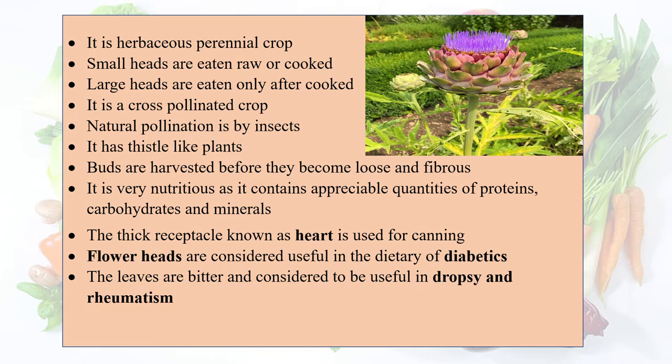Storage is also low once buds become loose and fibrous, so they are mostly harvested before that stage. It is very nutritious, containing appreciable quantities of proteins, carbohydrates, and minerals. The thick receptacle known as the heart is used for canning.